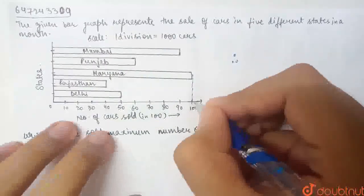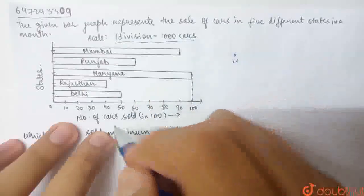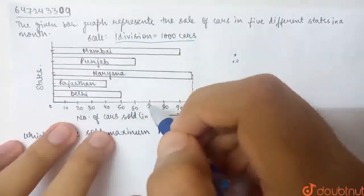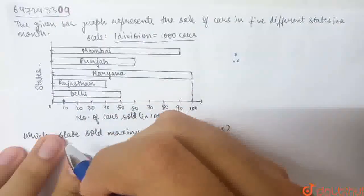Therefore, we have a 100 value here, but what is given here? One division represents 1,000 cars. But here we have one division, which is 0 to 10.